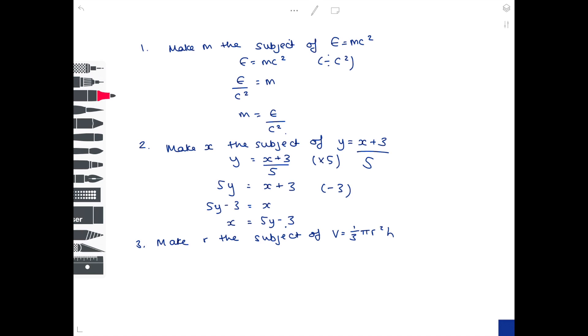In part three, make r the subject of v equals a third pi r squared h. This is more difficult. So we've got v equals a third pi r squared h. And look at the most disgusting bit first of all and try and get rid of that. And it's the third. We don't want it being times by third. So in order to get rid of it and make it equal 1, we effectively need to multiply third by 3.